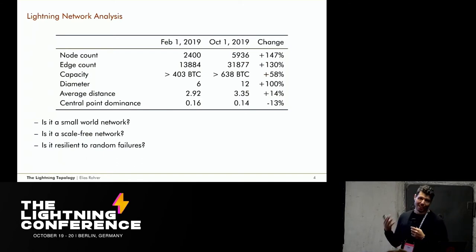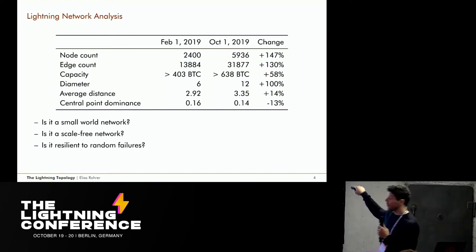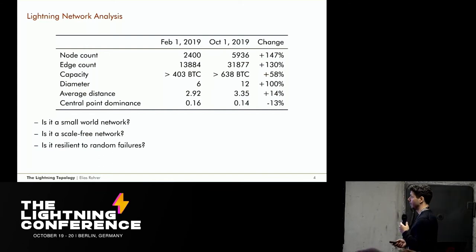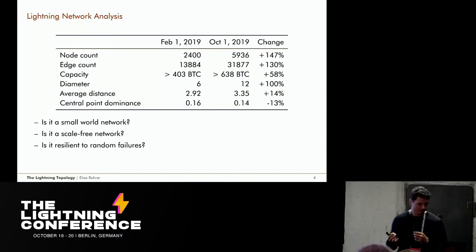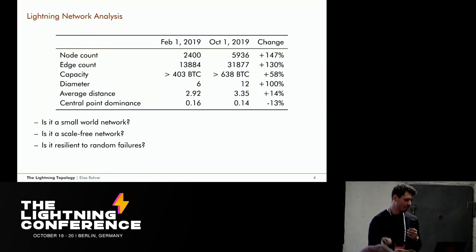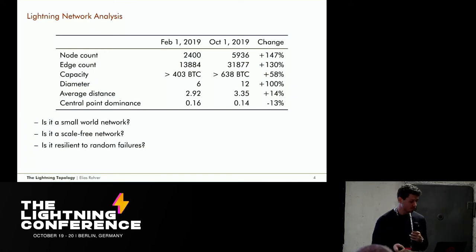Our research was based mainly on a snapshot from February 1st, but I've included a more recent snapshot from October 1st for comparison, to see how the network evolved over eight months. The node count increased by roughly 150%, and the number of payment channels increased by about 130%. Capacity grew less dramatically — only about 60% more — putting us at roughly 600-something Bitcoin in the whole network.